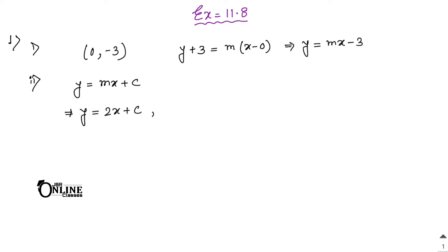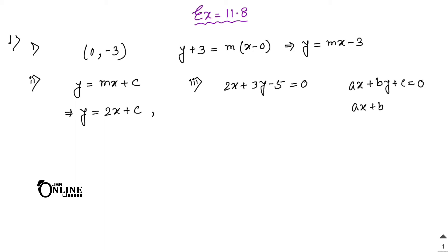Number three: parallel to the line 2x + 3y - 5 = 0. The formula is — if you have a line ax + by + c = 0 and want to find parallel lines, the answer is ax + by + k = 0. So by that formula, the answer will be 2x + 3y + k = 0, where k is the parameter.